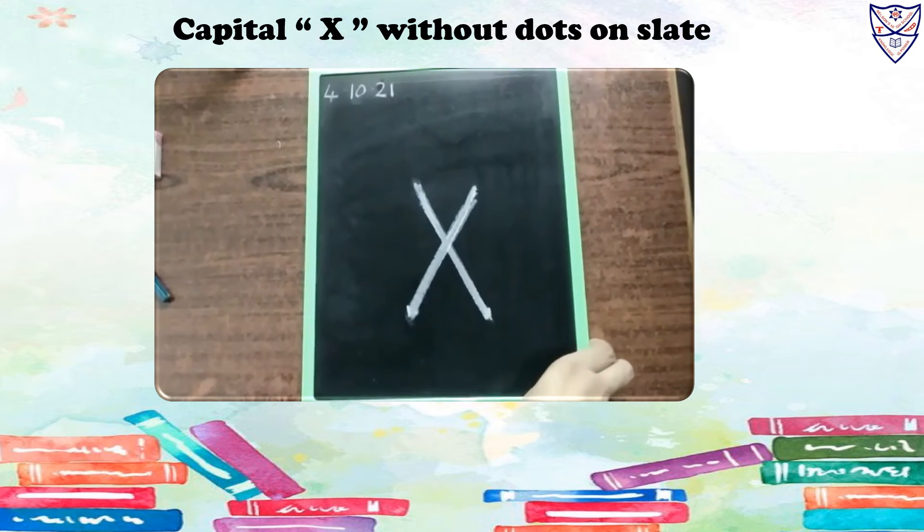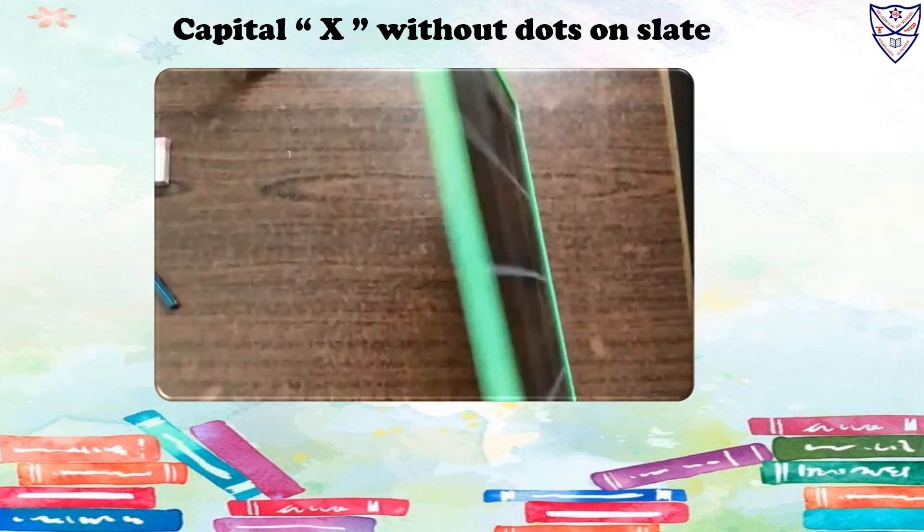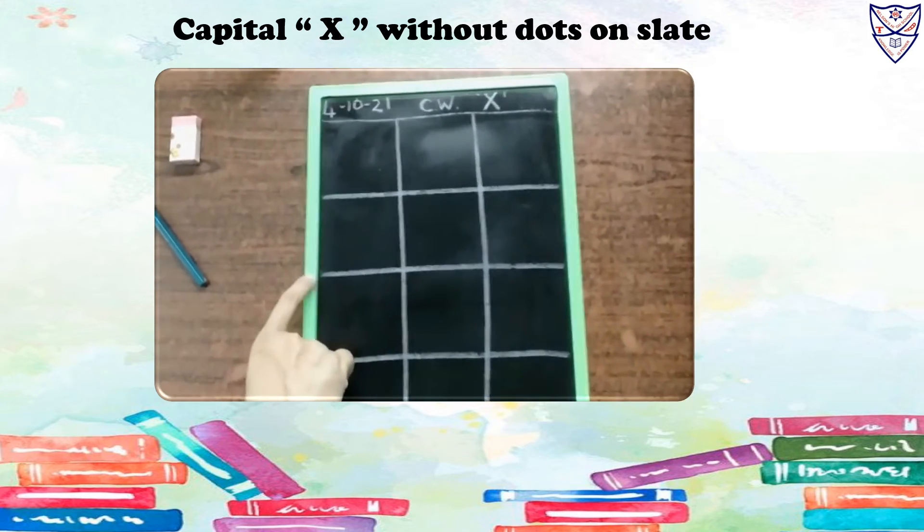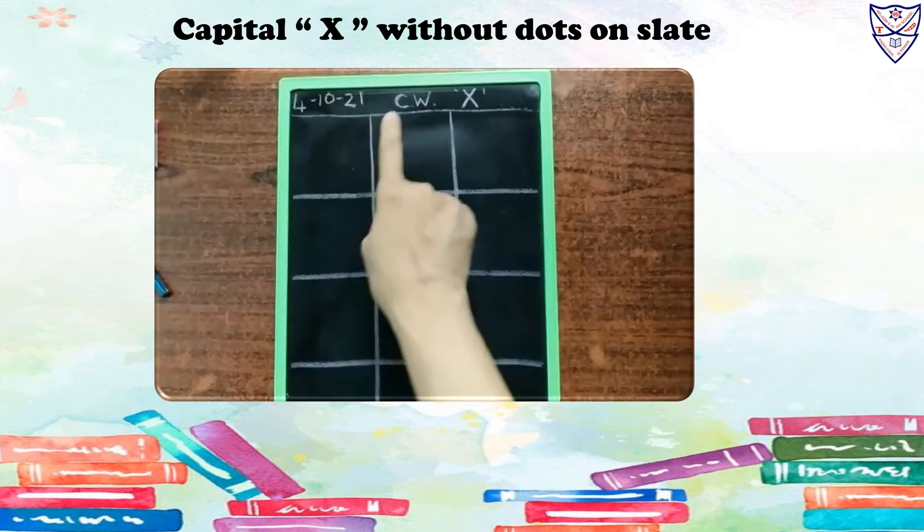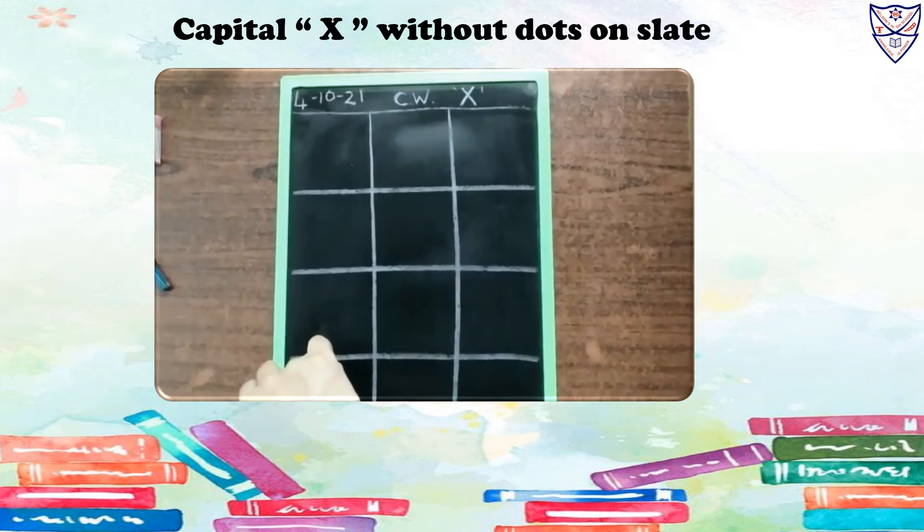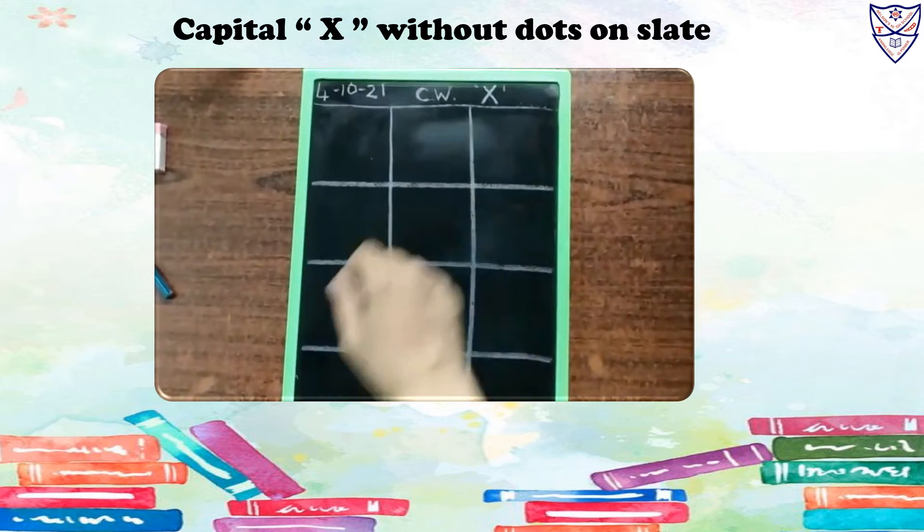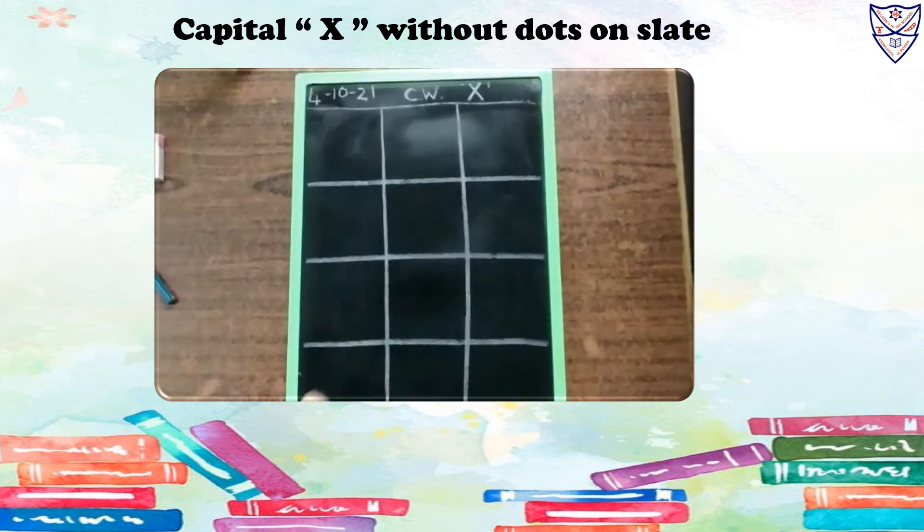Now, on the other side of this slate, parents, please write today's date. That is 4, 10, 21, capital C, capital W, classwork and heading X. And please draw the boxes like this.